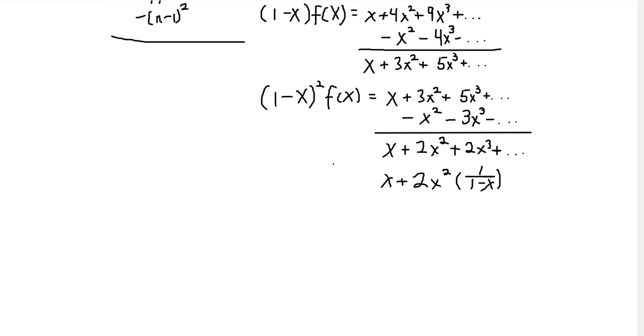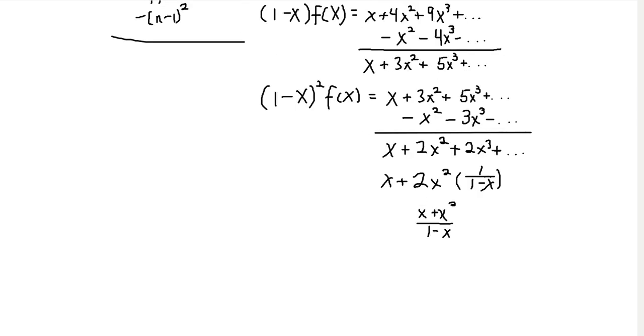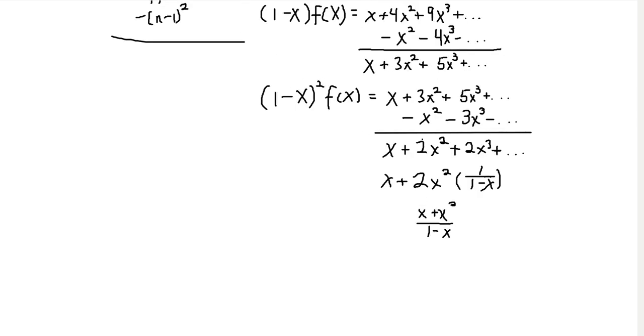So we're almost there. Now we just have to, well, 1, we have to combine this into one fraction, and that comes out to be x plus x squared over 1 minus x. And then we have to divide by 1 minus x squared. And so what that gives us is 1 minus x cubed in the denominator. So our generating function for the squares of integers is x plus x squared divided by 1 minus x cubed.